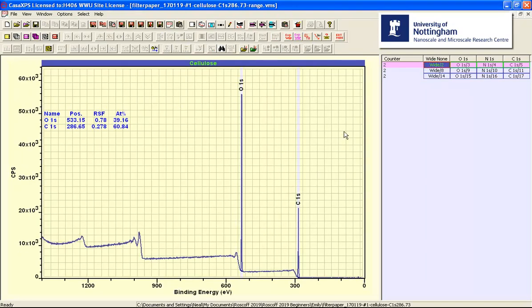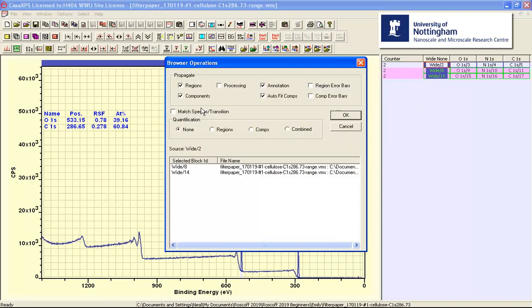And similarly for the survey spectrum. In this case we only have regions, but nevertheless we can use the same set of options because there are no components, none will be transferred and they won't be fitted. So we've got regions and annotation.